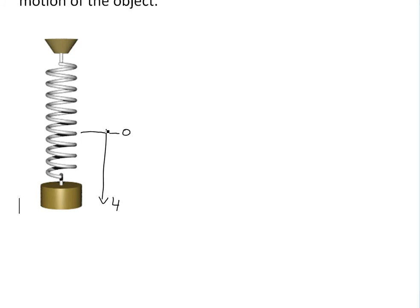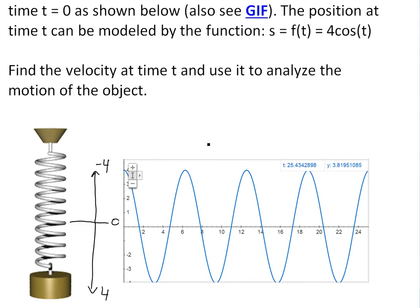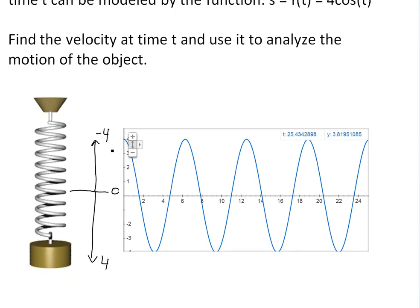If we were to graph the 4cos(t) with Google graphing, you get something like this, except once again downward is positive. By default, the top is positive, so we would have to flip this around.